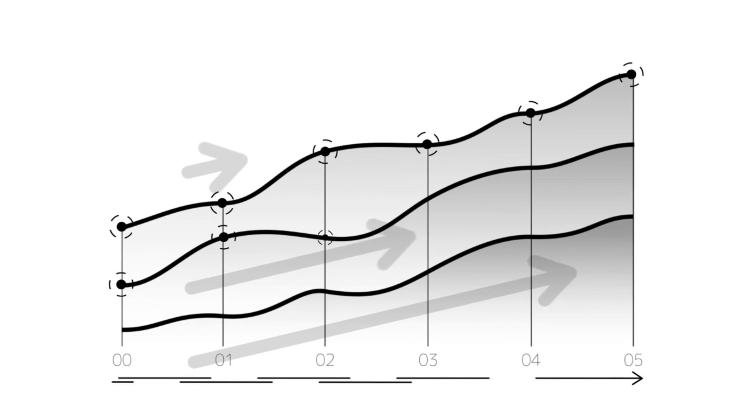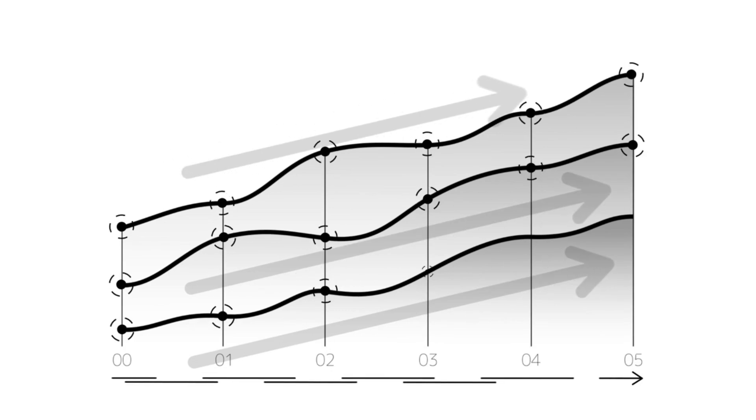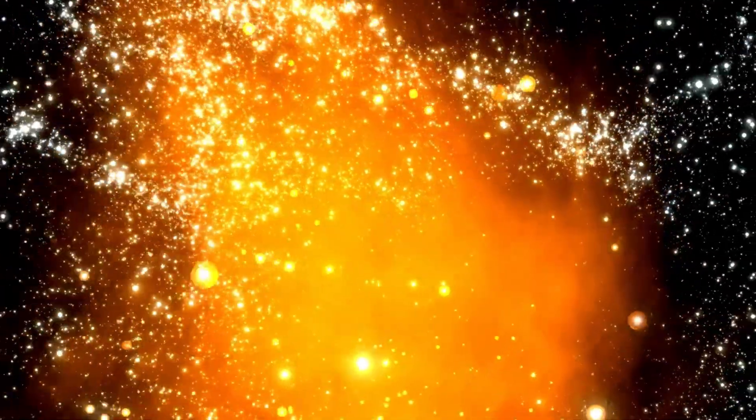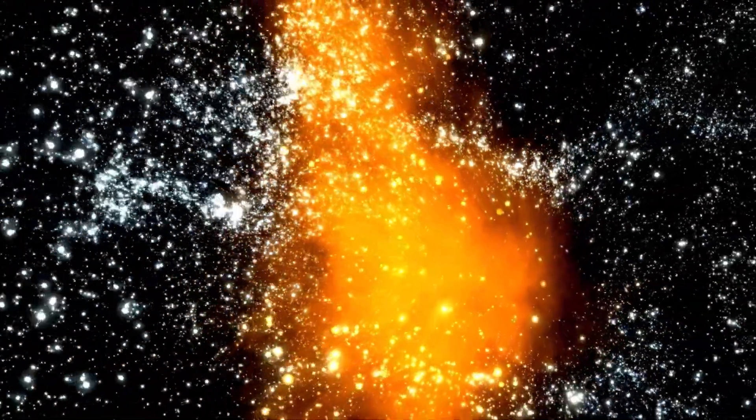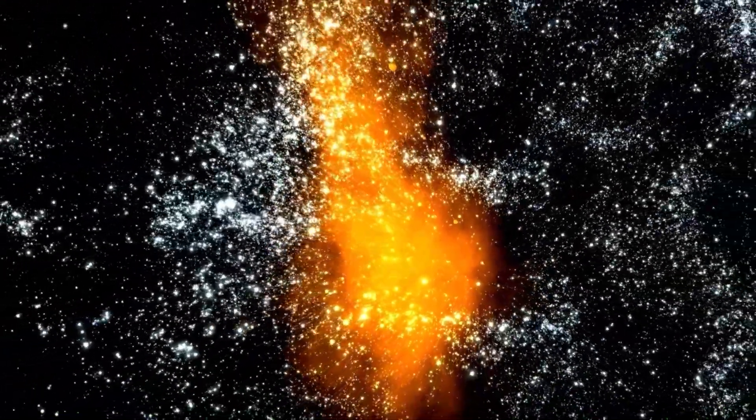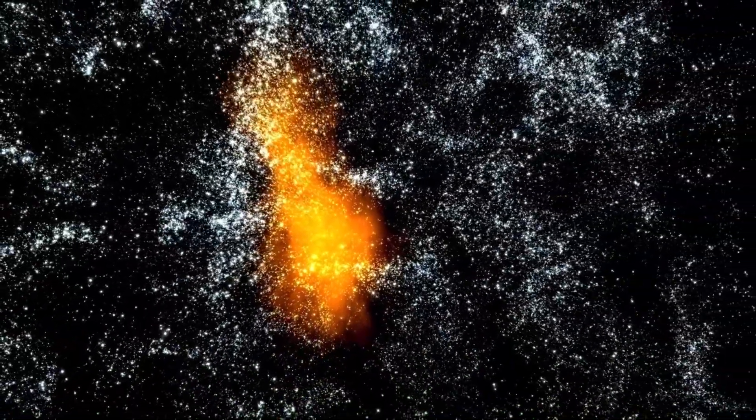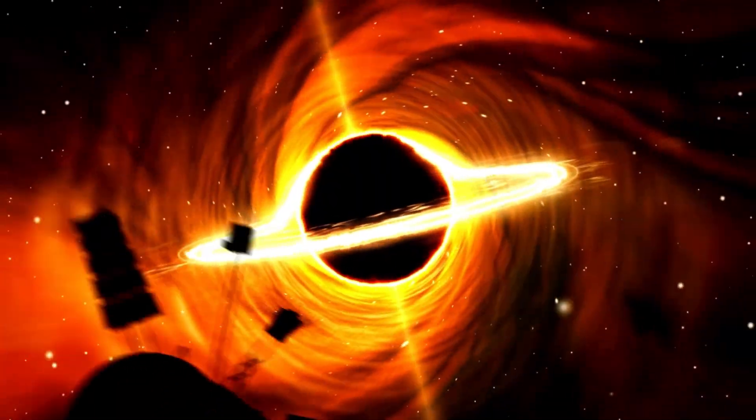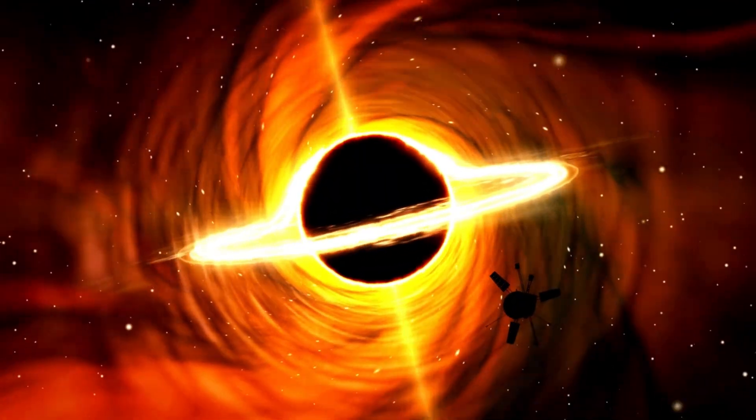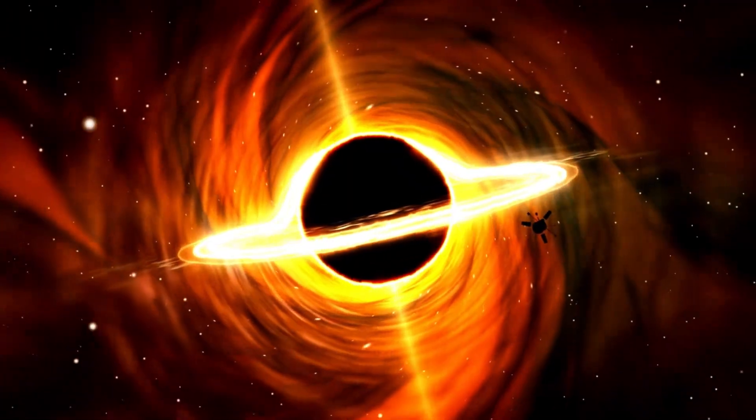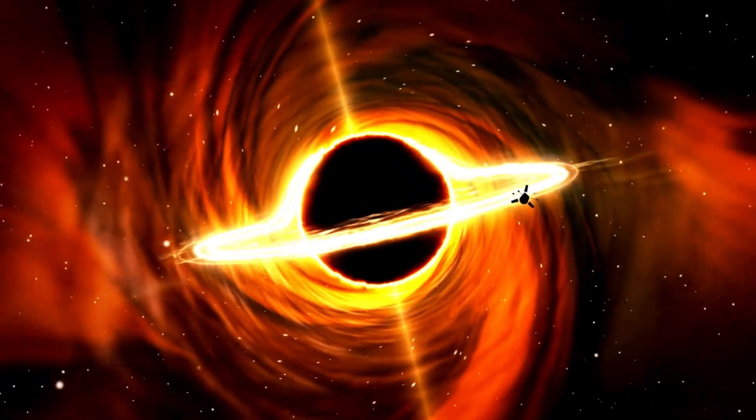Another possibility is that early black holes didn't grow in the slow, steady way we imagined. Instead, they may have experienced wild growth spurts, merging rapidly with other black holes or even swallowing entire star clusters in chaotic cosmic pileups. This kind of violent early universe behavior could have allowed them to skip the slow evolutionary track entirely, reaching supermassive status far faster than conventional theories predict.